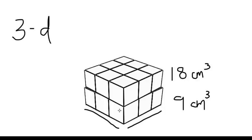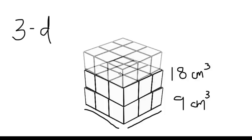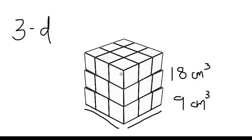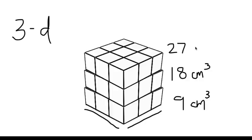Now let's add another layer of nine. So now the volume of this total shape is 27 centimeters cubed, because we have one layer of nine, then two layers of nine, then three layers of nine.